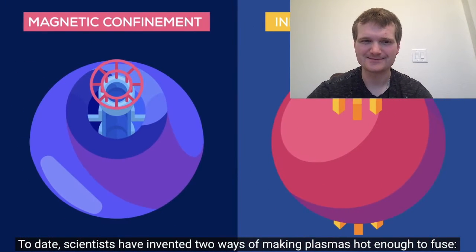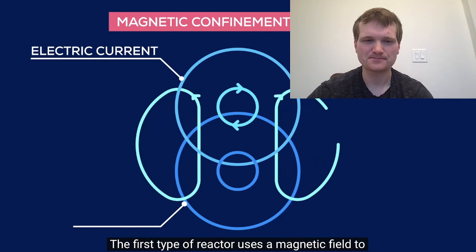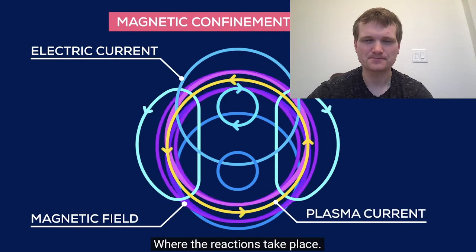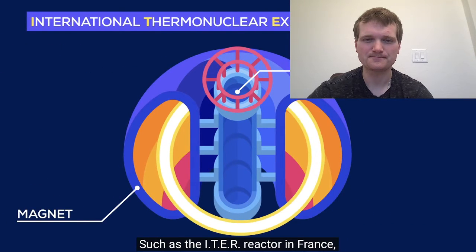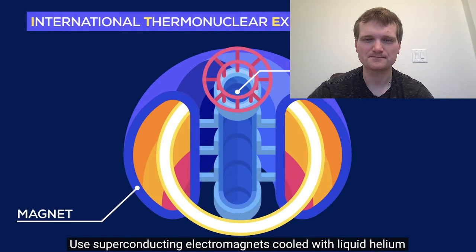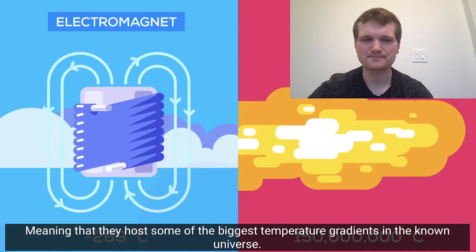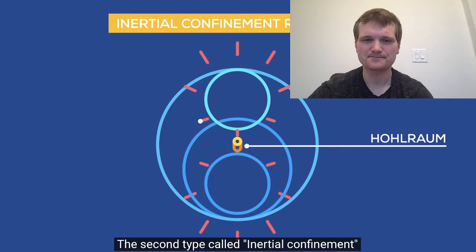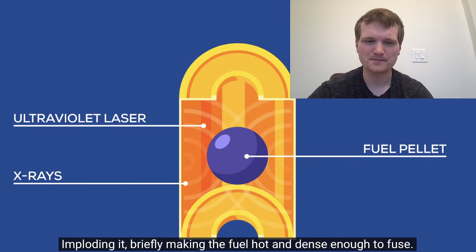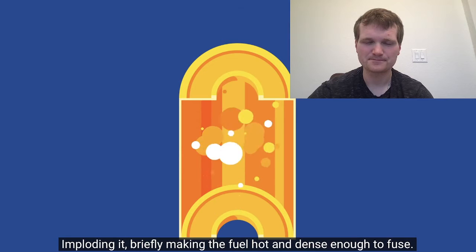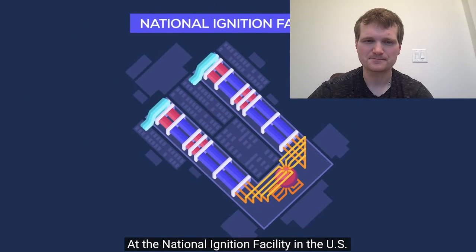To date, scientists have invented two ways of making plasmas hot enough to fuse. The first type of reactor uses a magnetic field to squeeze a plasma in a donut-shaped chamber where the reactions take place. These magnetic confinement reactors, such as the ITER reactor in France, use superconducting electromagnets cooled with liquid helium to within a few degrees of absolute zero, meaning they host some of the biggest temperature gradients in the known universe. The second type, called inertial confinement, uses pulses from superpowered lasers to heat the surface of a pellet of fuel, imploding it, briefly making the fuel hot and dense enough to fuse. In fact, one of the most powerful lasers in the world is used for fusion experiments at the National Ignition Facility in the US.